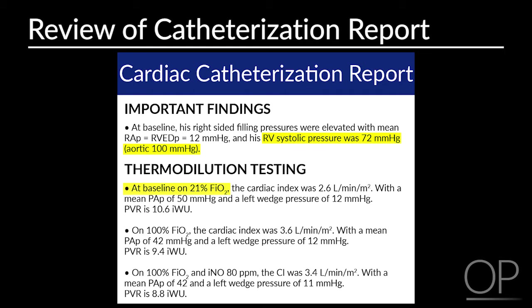During vasoreactive testing at baseline 21% oxygen, the patient had a mean pulmonary arterial pressure of 50 and a pulmonary vascular resistance of 10.6. During vasoreactive testing with 100% oxygen and inhaled nitric oxide, both his mean pulmonary artery pressure and pulmonary vascular resistance did decrease. This mild decrease indicates basal reactivity within his pulmonary vasculature, meaning he would respond well to inhaled nitric oxide or 100% oxygen if an acute event occurs during surgery.